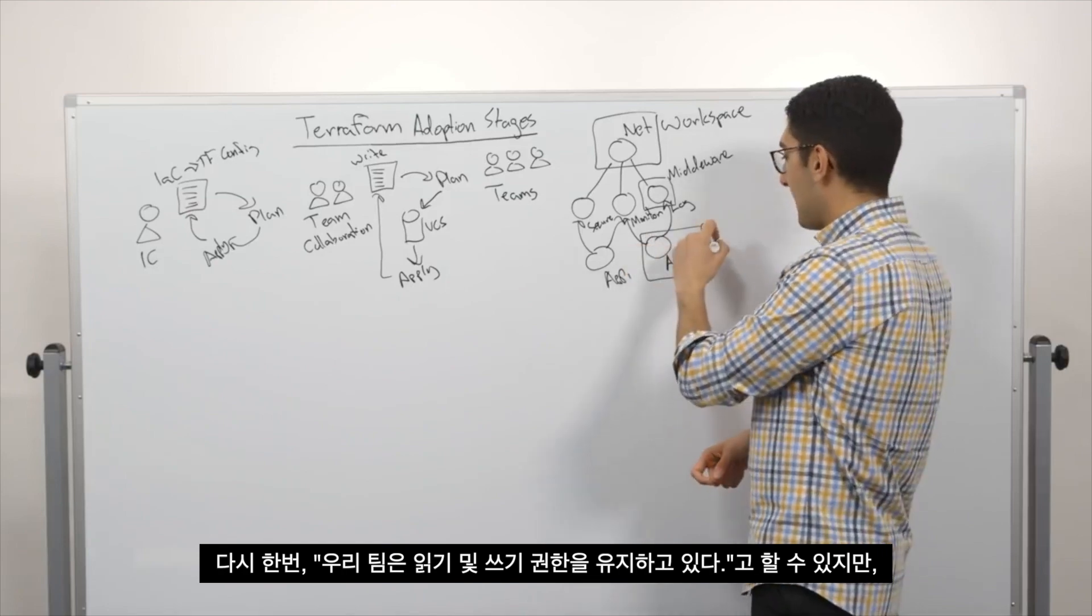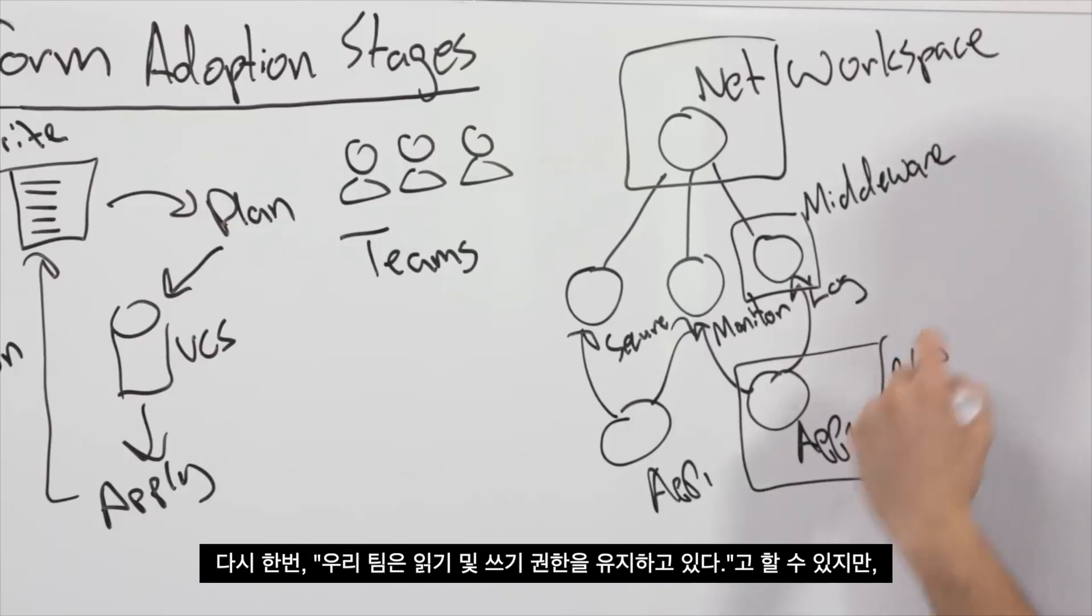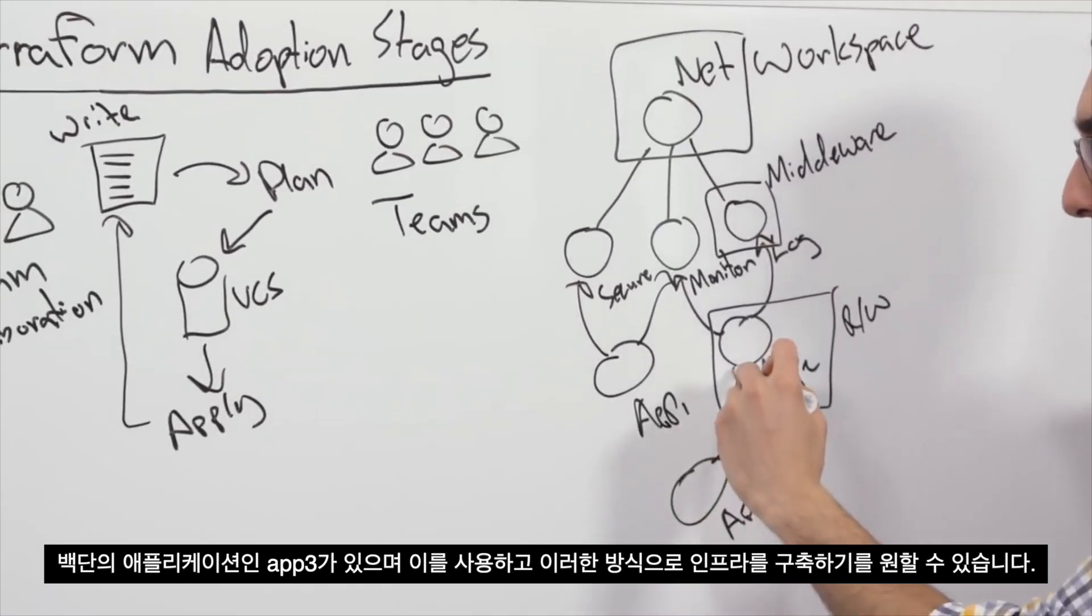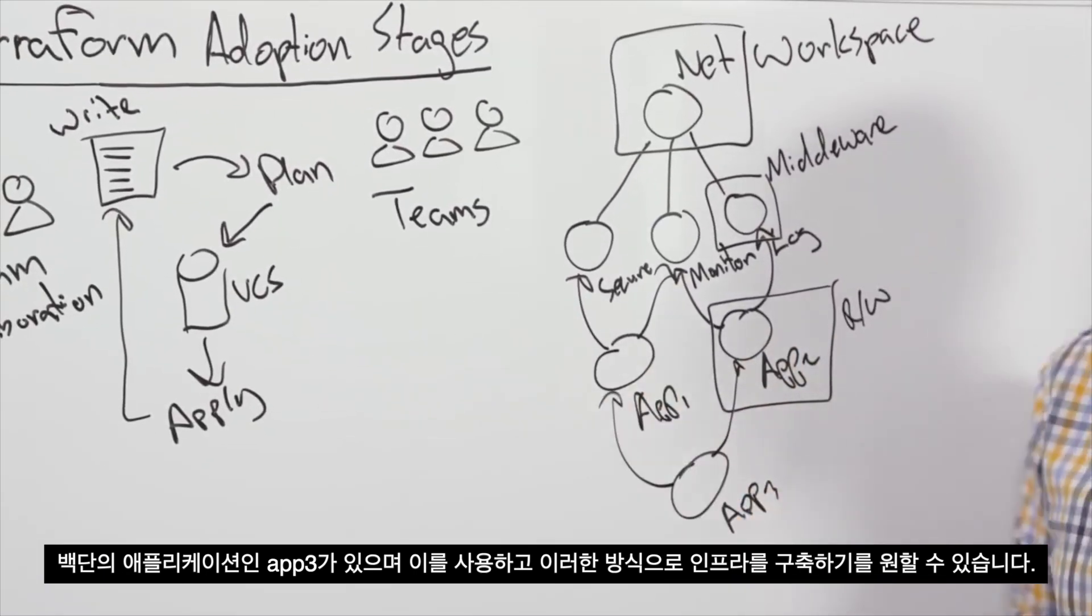And again, I might say my team maintains both the ability to read and write, but I have a downstream application app three that might want to consume me and again, build out the infrastructure this way.